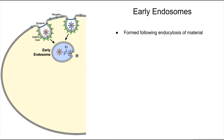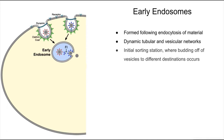Endosomes are dynamic tubular and vesicular networks. The function of the early endosome is to sort what materials are going to be recycled back to the cell membrane and what is to be sent further down the pathway to eventually be enzymatically degraded. Materials are concentrated into compartments where they can bud off to their respective destinations.